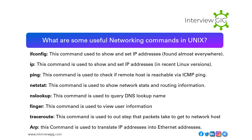What are some useful networking commands in Unix? ifconfig: used to show and set IP addresses, found almost everywhere. ip: used to show and set IP addresses in recent Linux versions. ping: used to check if a remote host is reachable via ICMP. netstat: used to show network stats and routing information. nslookup: used to query DNS lookup names. finger: used to view user information. traceroute: used to show the steps that packets take to get to a network host.